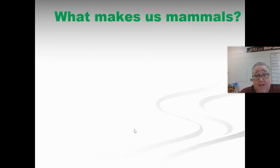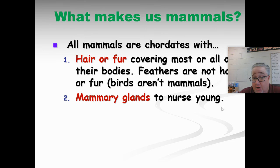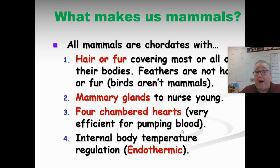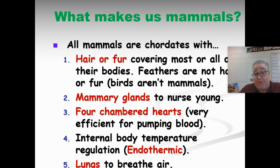Now mammals — the class we belong to. Mammals are chordates, and they all have hair or fur, mammary glands to nurse their young, and a four-chambered heart which is very efficient at pumping blood. We also have internal body temperature regulation — we're endothermic, maintaining around 98.6 degrees. If there's any alteration to that, it indicates something is wrong. Mammals also have lungs to breathe.